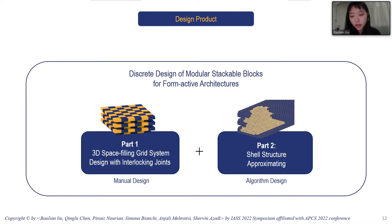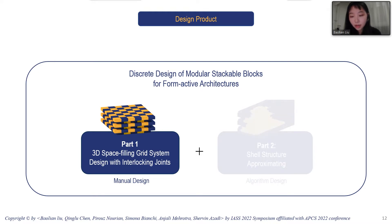The design itself is divided into two parts. The first part is to explore a 3D space-fitting grid with interlocking joints. The second part is to approximate the shell structure with the grid designed in part one.